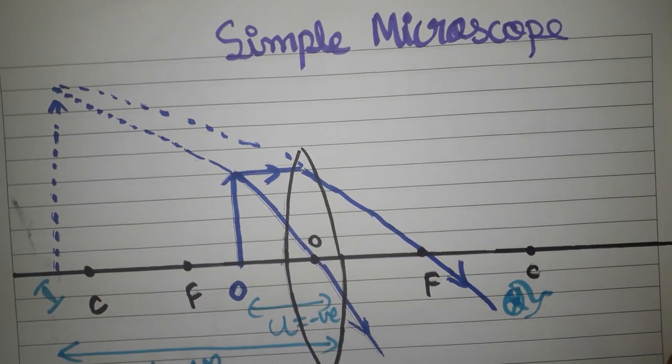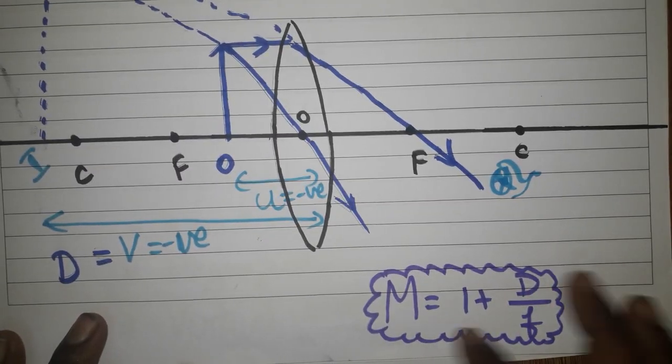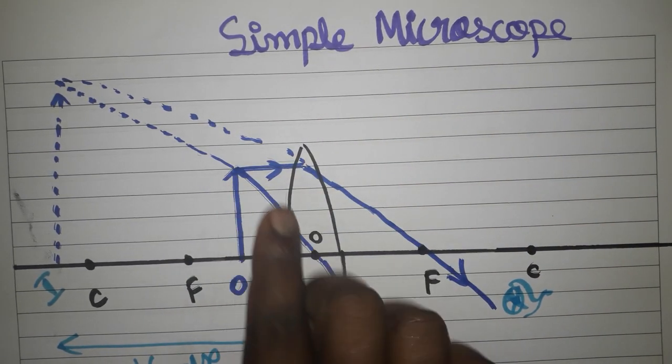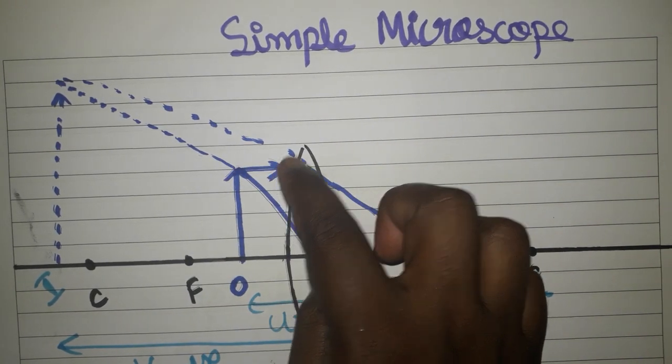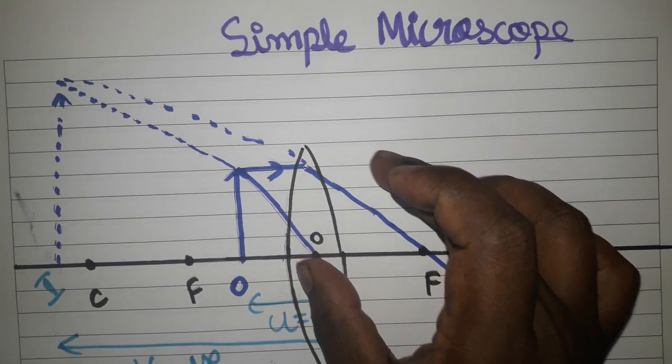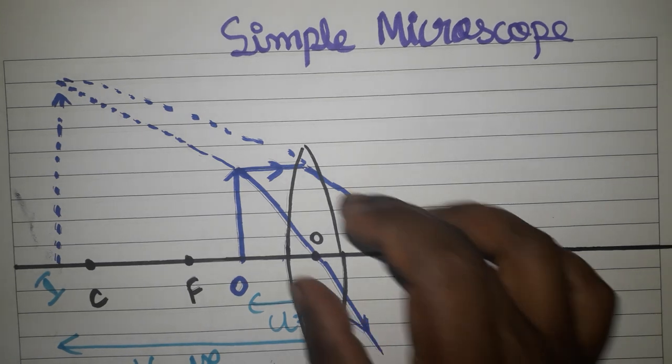Hello students, today we are going to learn simple microscope construction as well as magnification derivation. This is a simple microscope. I placed the object here. When the ray is parallel to the principal axis, it will go through the focus. When the ray is going through the optical center, it will go straight.